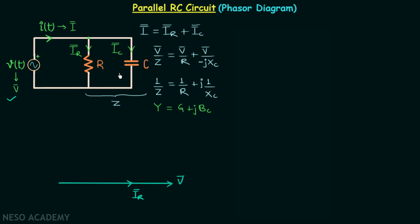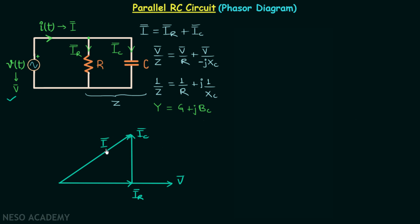Moving on to IC phasor — it is the current through the capacitor and therefore it leads the voltage phasor by 90 degrees. This vector is our IC phasor. I phasor equals the vector sum of IR phasor and IC phasor, giving us the resultant vector I phasor. The angle between the net current phasor and the net voltage phasor is the power factor angle theta.